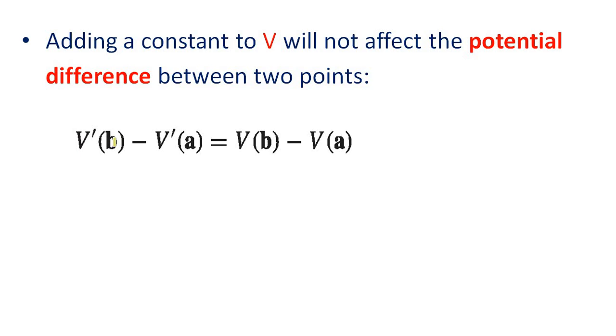Potential difference means V prime of B minus V prime of A equal to V of B minus V of A. Because V prime of B equal to V of B plus k, V prime of A equal to V of A plus k.